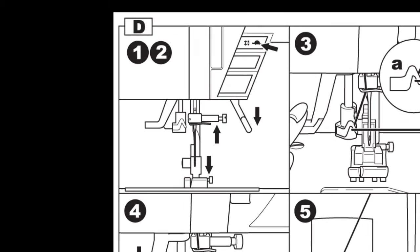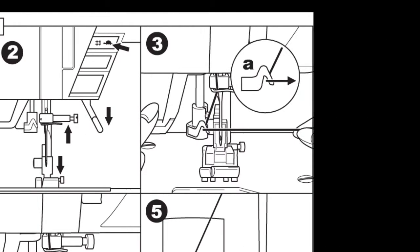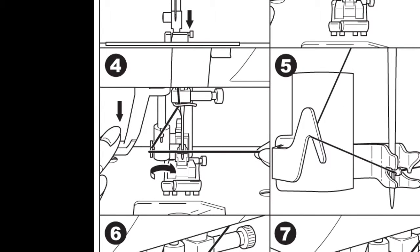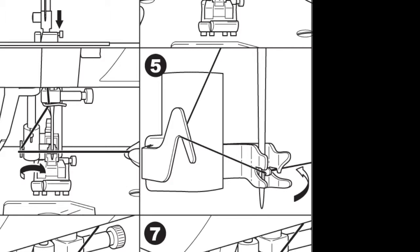To thread the needle, lower the presser foot and check that the needle is raised. If it is not, raise the needle by pressing the needle up-down button. Lower the threader slowly and draw thread through the thread guide and pull it toward the right. Lower the lever as far as it will go. The threader will turn and the hook pin will go through the needle eye.